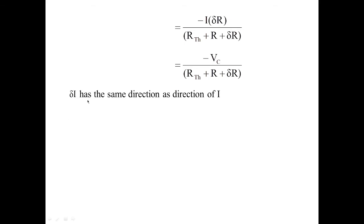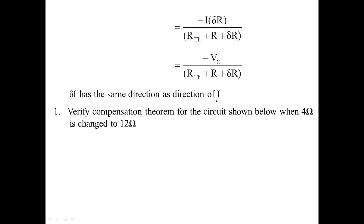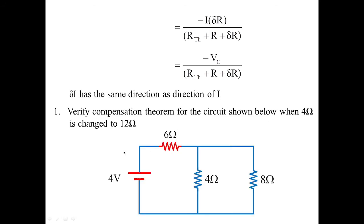The changed value of current has the same direction as the original current. To understand this theorem better, let us take an example where we verify the Compensation Theorem when a 4-ohm resistor is changed to 12 ohms. The circuit given has 4 volts, 6 ohms, and 8 ohms including the 4-ohm load. This circuit needs to be modified into a Thevenin's equivalent circuit.